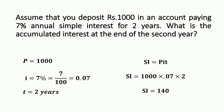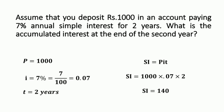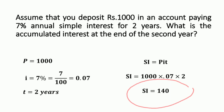The simple interest is calculated using SI = P × I × T, which is 1000 × 0.07 × 2. Multiplying these values gives SI = 140. So the accumulated interest at the end of the second year is ₹140.